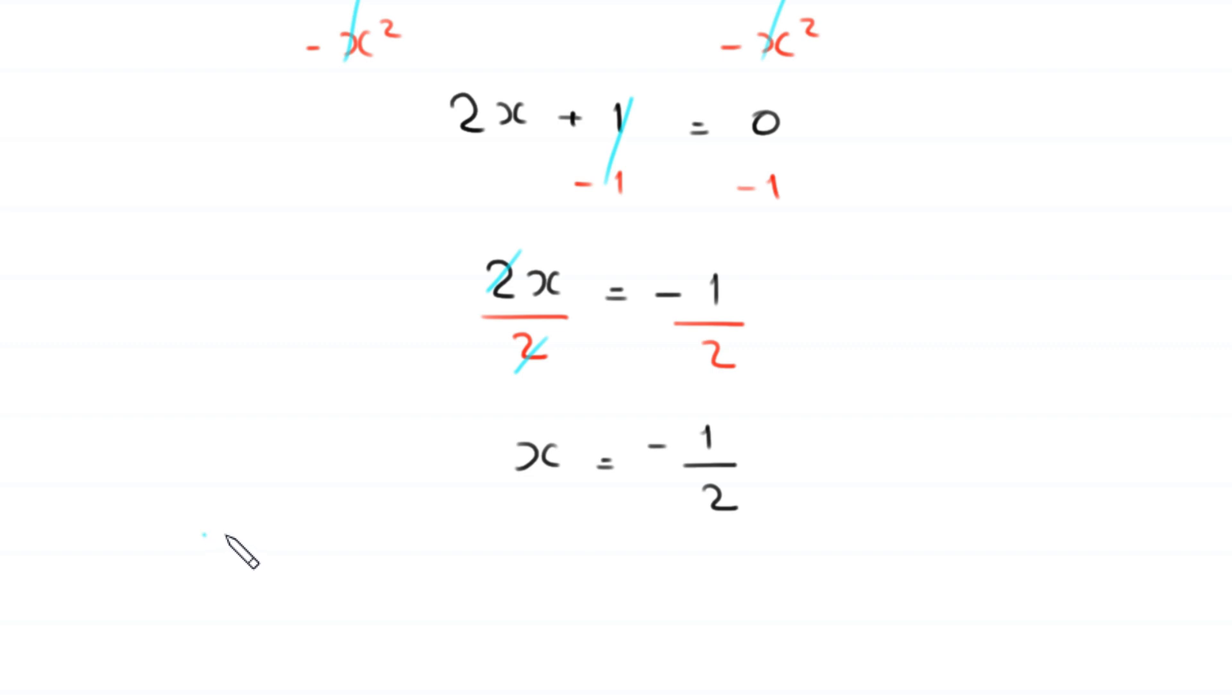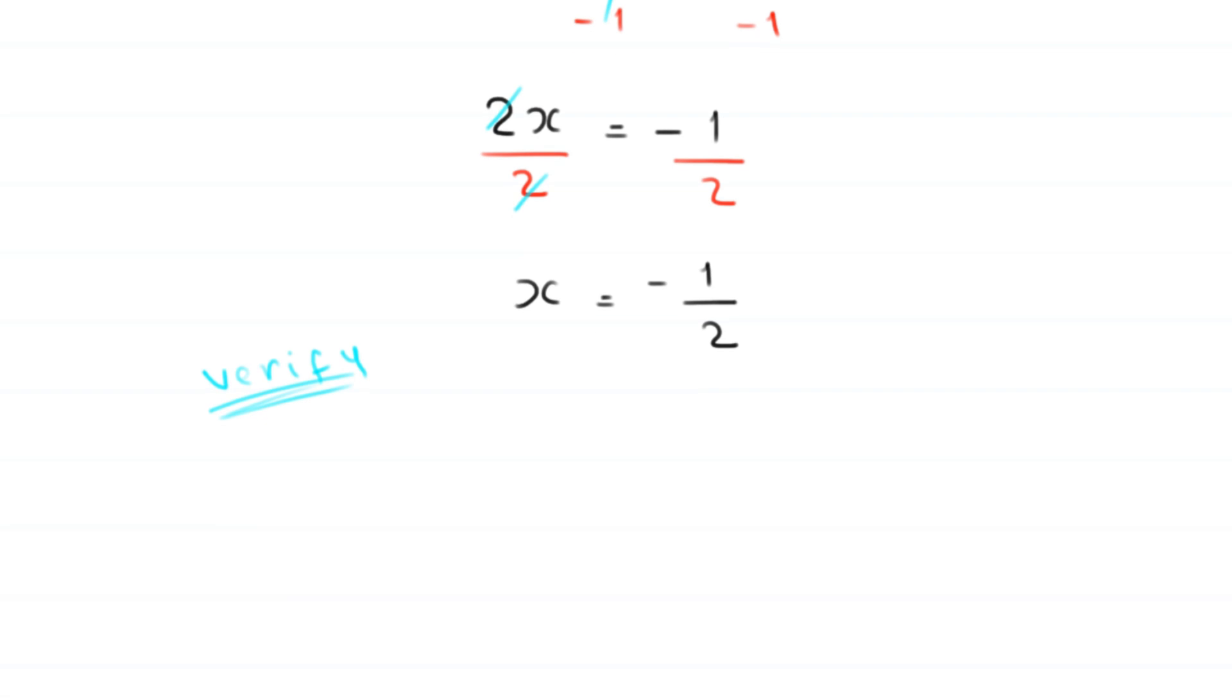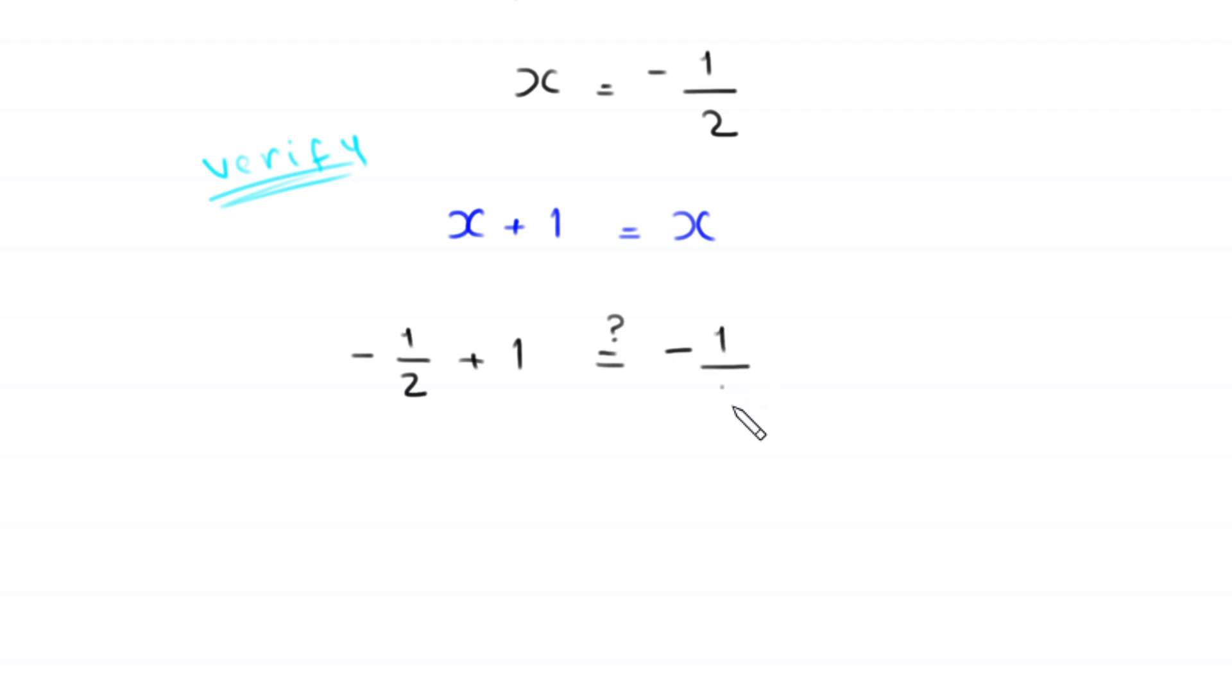Now, let us verify this value of x and see if this is a solution or not. To verify this value, we put this value in the original equation. The original equation is x + 1 equals x. So, this equation will become negative 1 over 2 plus 1 equals negative 1 over 2.